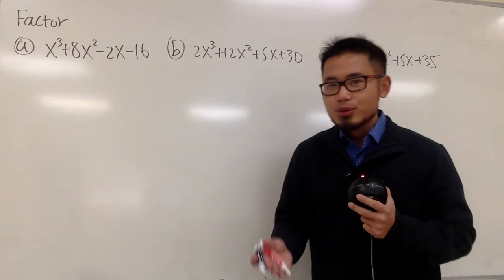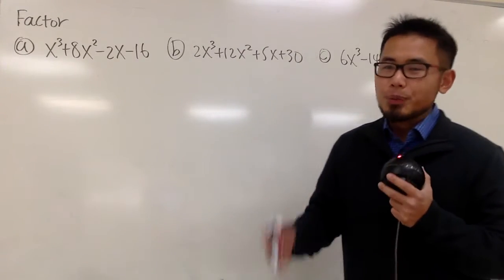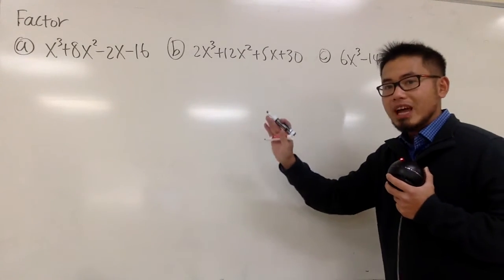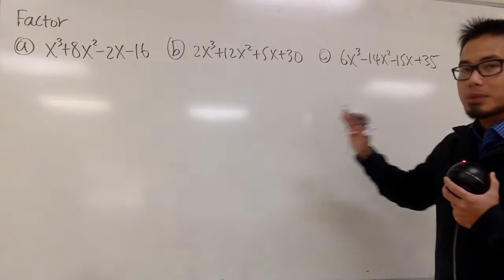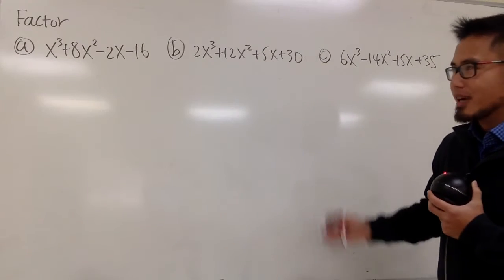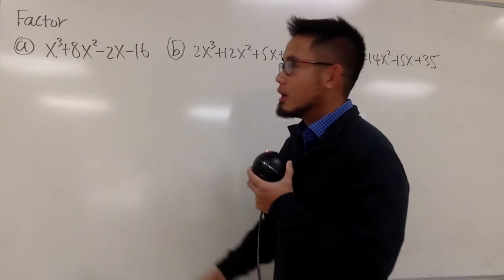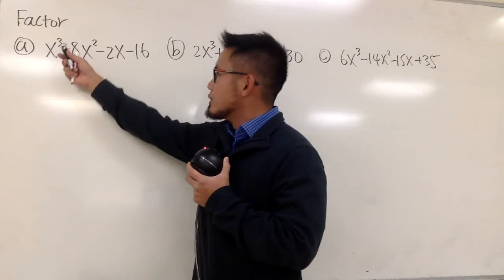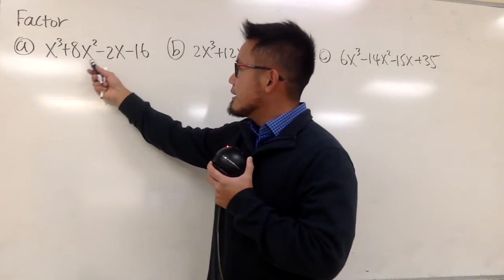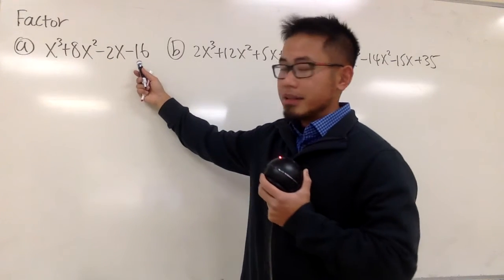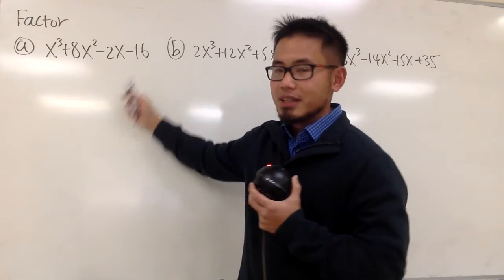I'm going to show you guys how to do factoring by grouping, and this works really well whenever we have four-term polynomials. So let's take a look at this one right here. We have x to the third power plus 8x squared minus 2x minus 16.